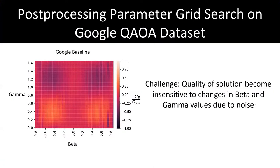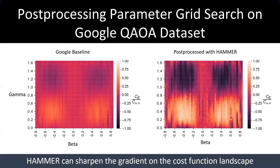On the near term noisy quantum computers, when we are training the QAOA circuit, the quality of solution becomes insensitive to changes in beta and gamma parameters. This happens because of averaging effect of the noise. This is also known as vanishing gradient problem. In our paper, we show by post-processing the output distribution with HAMMER, we can sharpen the gradient and enable better training of QAOA circuits.